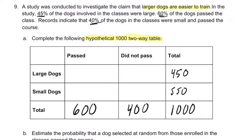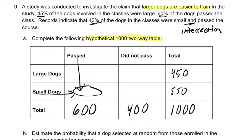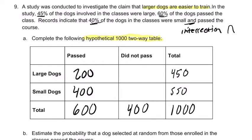40% of the dogs in the classes were small and passed the course. That's our intersection probability because we have the word 'and' in there — small and passed the course, intersecting right here. That's 40%, which is 400. So 200 large dogs passed, since 200 adds to 600.